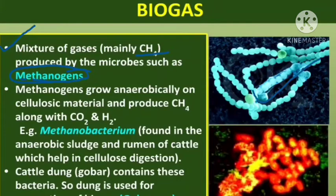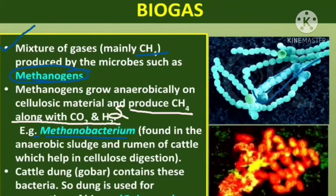When they produce methane, they are called methanogens. That is why for the production of biogas we use methanobacterium, which is also called methanogens. Methanogens grow anaerobically on cellulosic material and produce methane along with carbon dioxide and hydrogen sulfide. This bacteria has the ability to produce methane and the other side products — carbon dioxide, sulfur dioxide, and hydrogen sulfide.